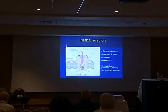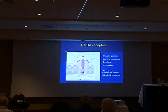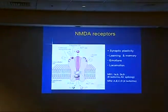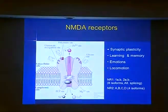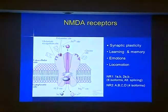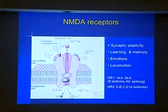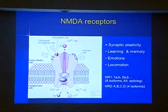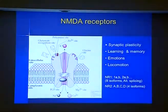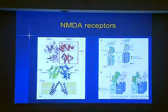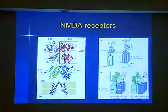Just a few words about the NMDA receptor. This receptor is an excitatory receptor. It belongs to the glutamate receptors family. It's responsible for synaptic plasticity, learning and memory, emotions, and locomotion. It is built mainly from two major subunits, NR1 and NR2. NR1 has eight different isoforms and NR2 has four different isoforms. The receptor itself is a tetramer built from a combination of these NR1 and NR2s, usually two NR1 and two NR2s.